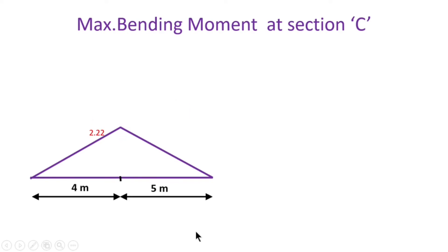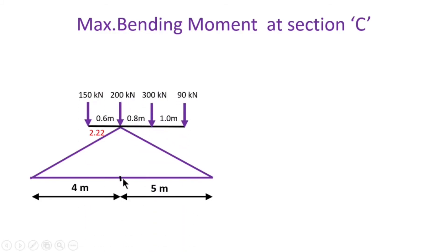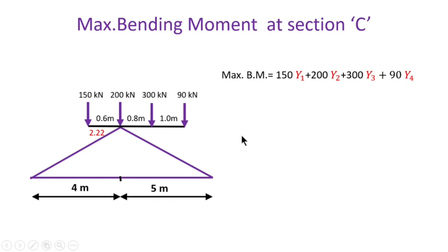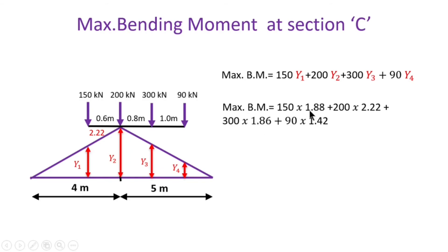Now calculate the maximum bending moment. Keep the 200 kN load on the section. Maximum bending moment equals 150 into y1 plus 200 into y2 plus 300 into y3 plus 90 into y4, where y1, y2, y3, y4 are the ordinates of the influence line diagram under each respective load. Maximum bending moment equals 150 into 1.88 (y1 value), and the final maximum bending moment equals 1411.80 kN·m.